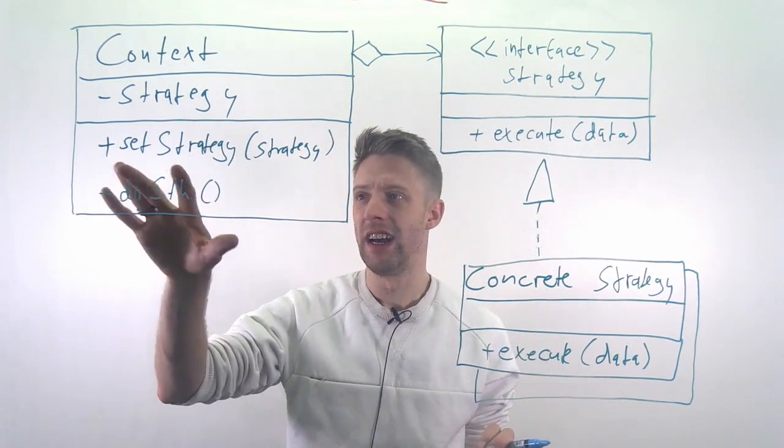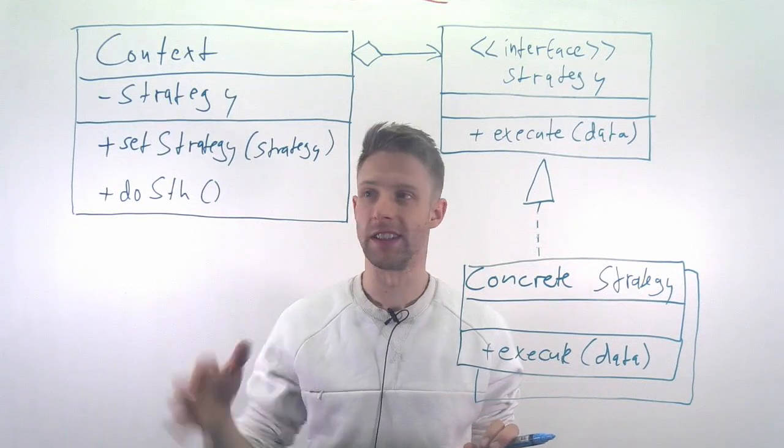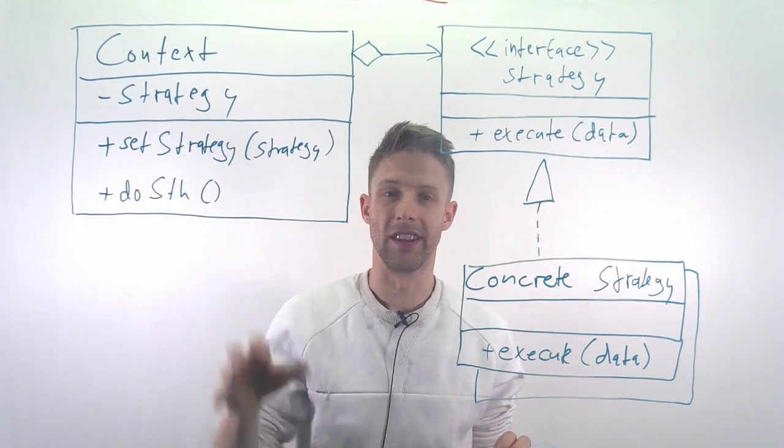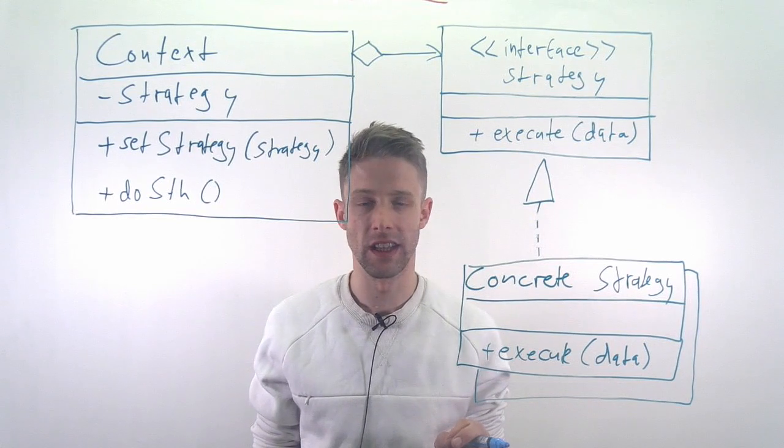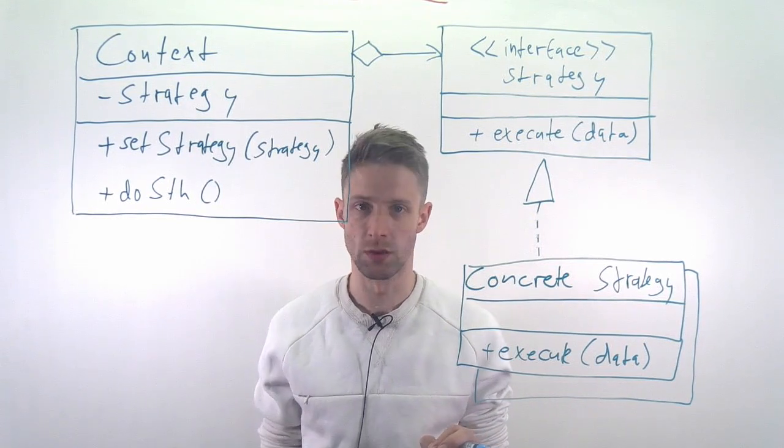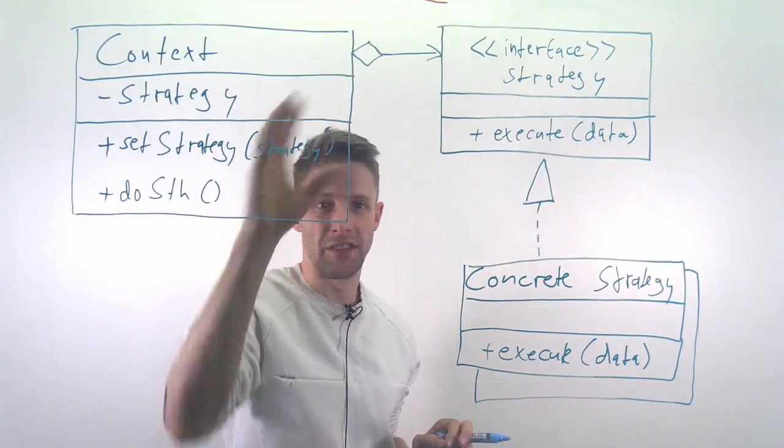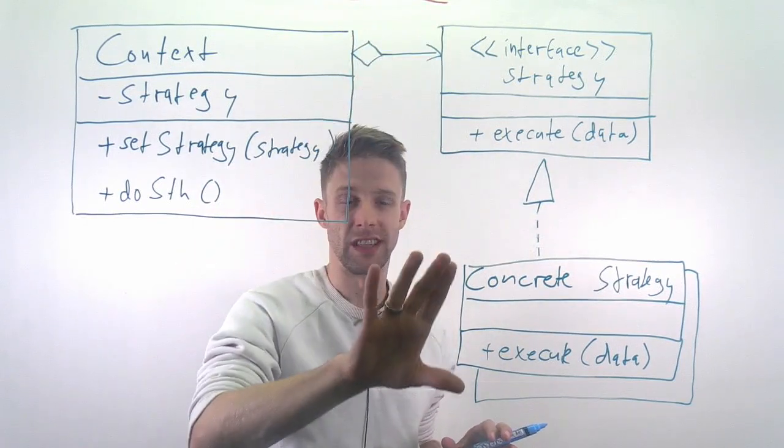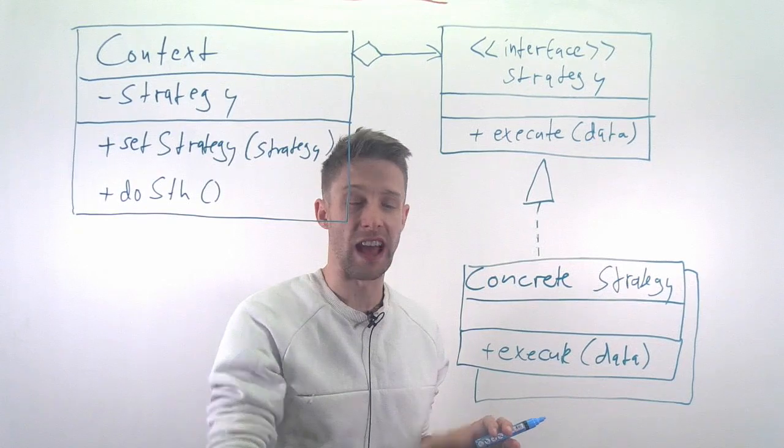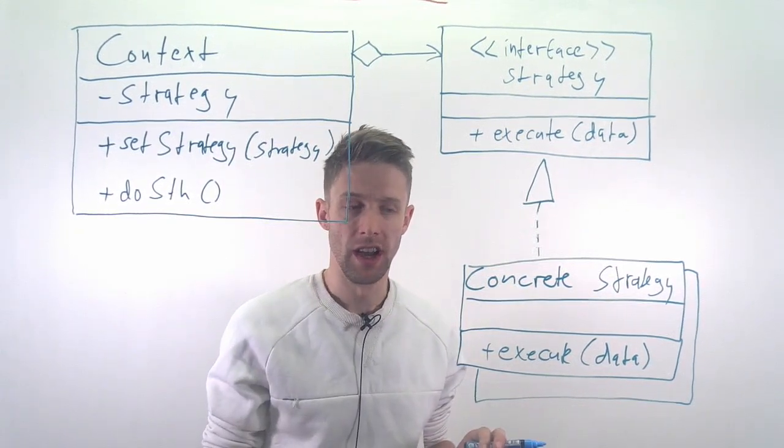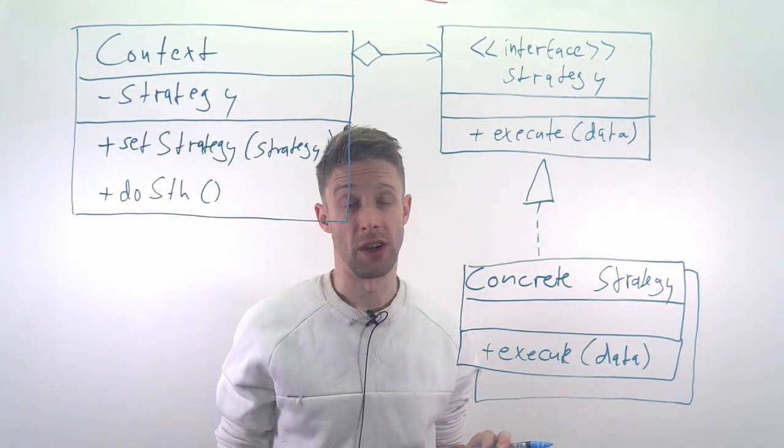Instead of implementing a single algorithm in the system and you then have to replace it manually, you can implement this as a strategy pattern and simply say I want to have a method with which I can set the routing algorithm at runtime. Then the algorithm itself is a different class or an interface that is implemented and you could basically just add another implementation and then change that runtime.